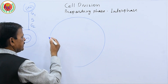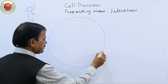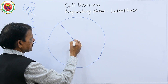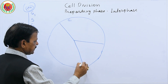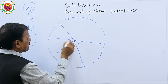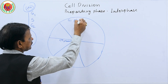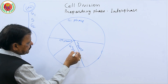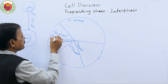The cell cycle is the cyclic regeneration of new cells, composed of sub-phases: G1 phase, S phase, G2 phase, M phase, and G0 phase. G0 phase is also known as the quiescent phase.